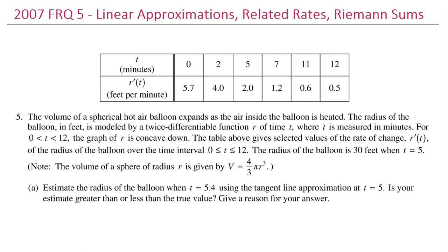In this video, I will walk you through free response question number five from the 2007 AP Calculus exam. This problem involves linear approximations, related rates, and Riemann sums.